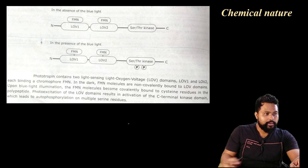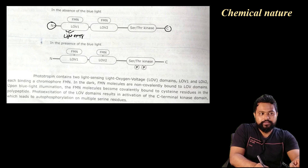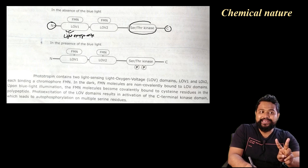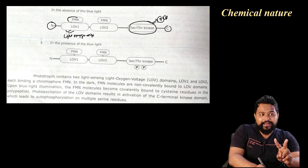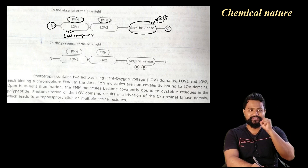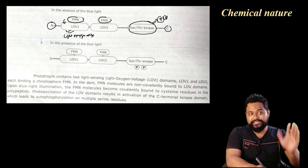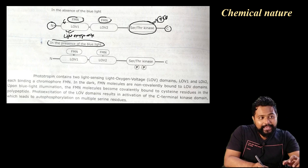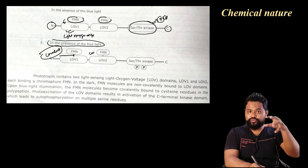The phototropin monomer has an N-terminal containing LOV1 and LOV2 domains — LOV stands for Light, Oxygen, Voltage domain — and a C-terminal serine-threonine kinase domain that is mainly responsible for phosphorylation. In the absence of light, FMN is non-covalently attached. In the presence of blue light, FMN becomes covalently bonded, and the LOV1 and LOV2 regions undergo a structural change triggering signal transduction.